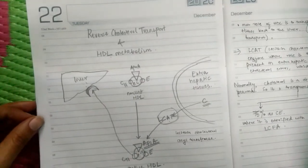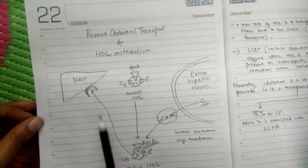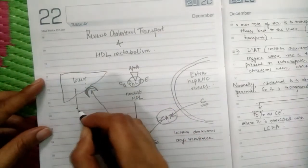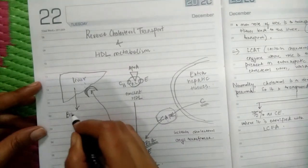Now as the name suggests, reverse cholesterol transport, that means the cholesterol has been transported from the extra hepatic tissues back to the liver, where this cholesterol will be used in the synthesis of bile salts.